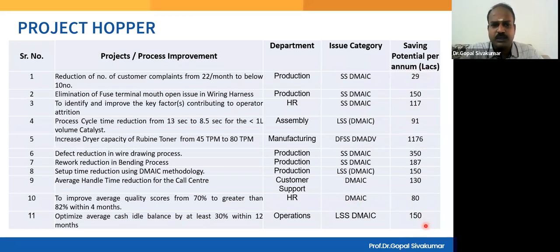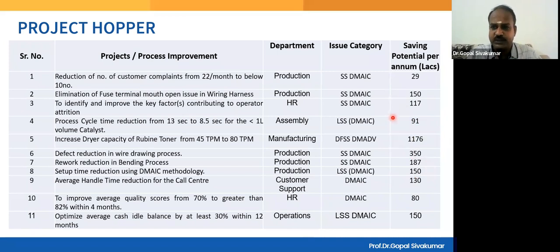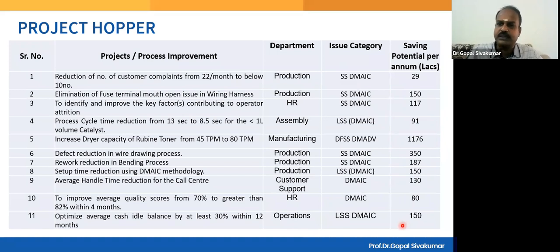The saving potential per annum is also listed. Several crores of savings are possible by running these 11 projects. To decide which project gets priority, you use criteria — which we will discuss when covering the prioritization matrix. The project that appears at the top of the prioritized list can then be prepared for approval.